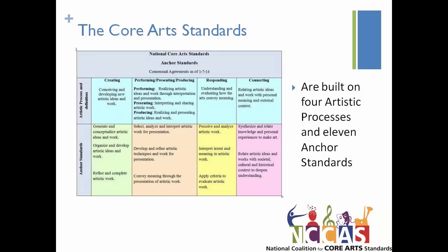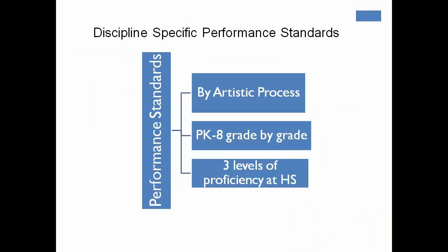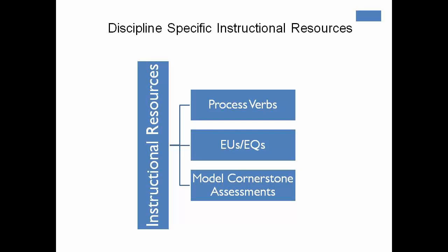These 11 anchor standards had to go into performance standards. Performance standards are really what it looks like grade by grade for each specific discipline. They're organized by those artistic processes. They express what you see the students doing — what students know and do pre-K through eight, and at three levels of proficiency at high school. We also included some instructional resources: process verbs that take creating, for example, and break it down into steps, enduring understandings and essential questions, and some model cornerstone assessments.